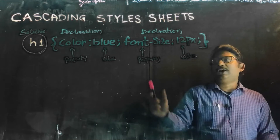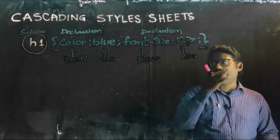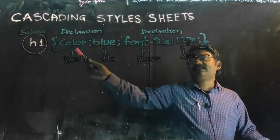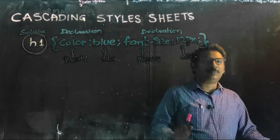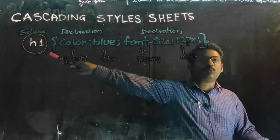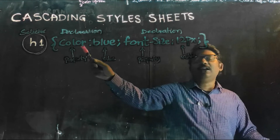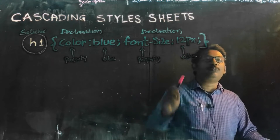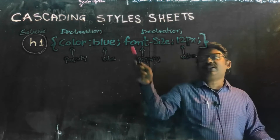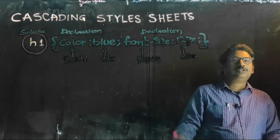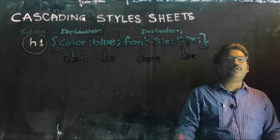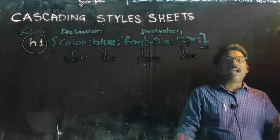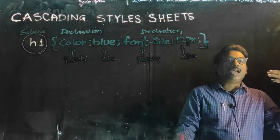Within that particular web page, we can use this particular tag for however many tags we want with the same properties. The properties we have taken here is the declaration section. We have taken two different properties — one is color, and the other is font size. That means, wherever I use the h1 tag, the color should be declared as blue and the font size should be 12px. This is the declaration section, similar to when you are writing a C program with declaration section and opening and closing braces.